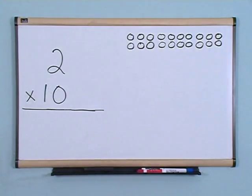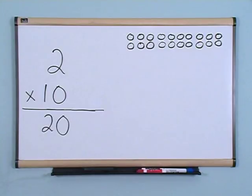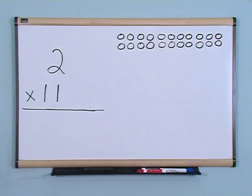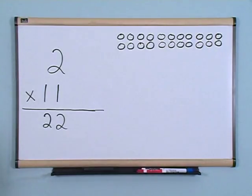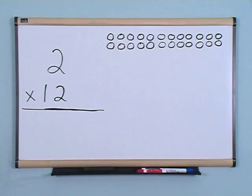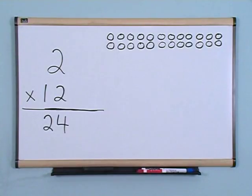2 times 10 is 20. 2 times 11 is 22. 2 times 12 is 24.